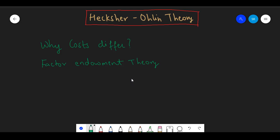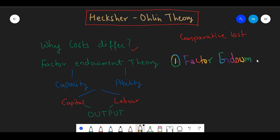Factor endowment refers to the capacity and ability of the factor inputs to produce outputs. The theory agrees with comparative cost theory given by David Ricardo. However, it states that the difference in cost arises due to two reasons: first, the region's factor endowments and second, the factor proportions.